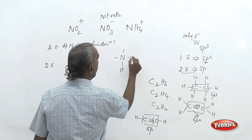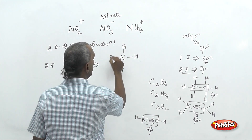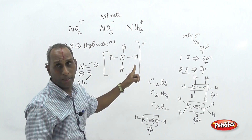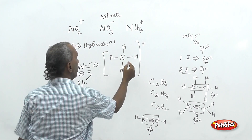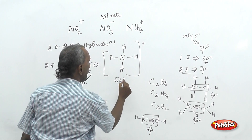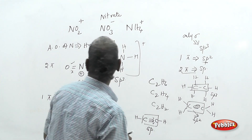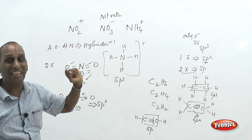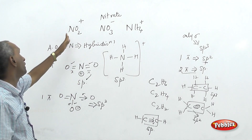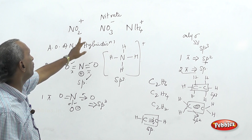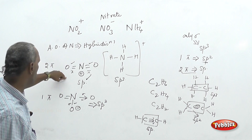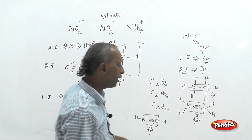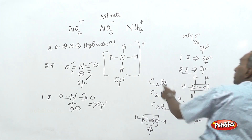For ammonium ion NH₄⁺ — four N–H single bonds and a positive charge, with only single bonds throughout. Only single bonds means SP3 hybridization. So the correct hybridization order is: NO₂⁺ is SP hybridized, NO₃⁻ (nitrate anion) is SP2 hybridized, and NH₄⁺ (ammonium ion) is SP3 hybridized.